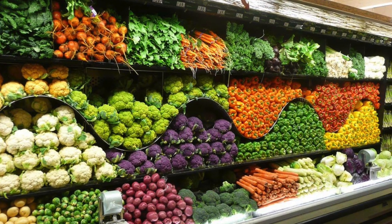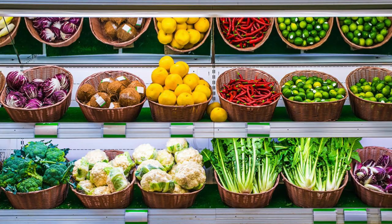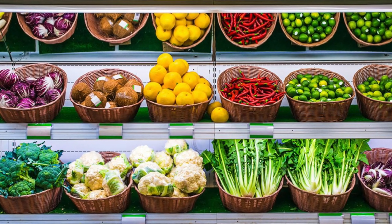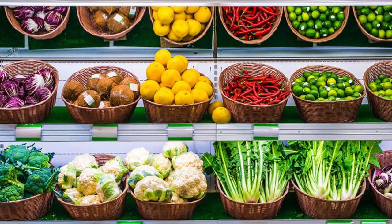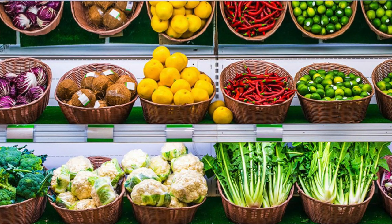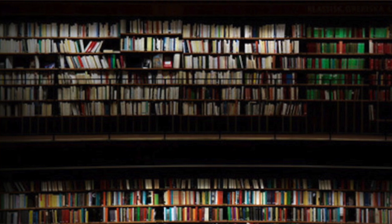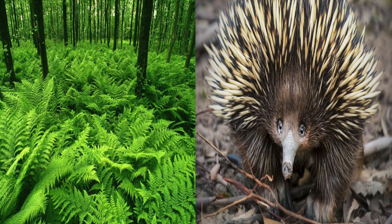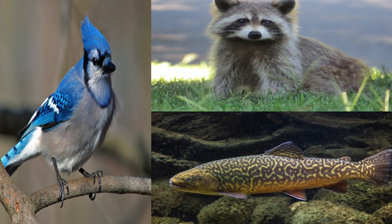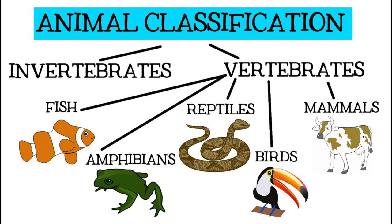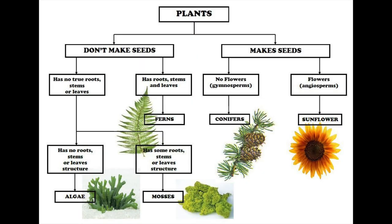People usually group things by how they are alike and different. Grouping things makes them easier to find and shows relationships. Librarians group books by the way their subject matter is related. You group living things whenever you call them plants or animals. You group animals when you call them birds, fish, or mammals. Scientists classify or group organisms by their similarities. When you classify something, you're arranging it in a group using a system.